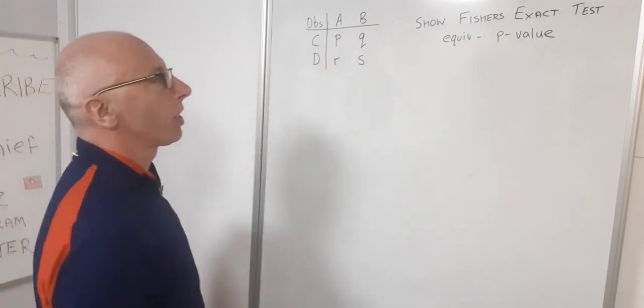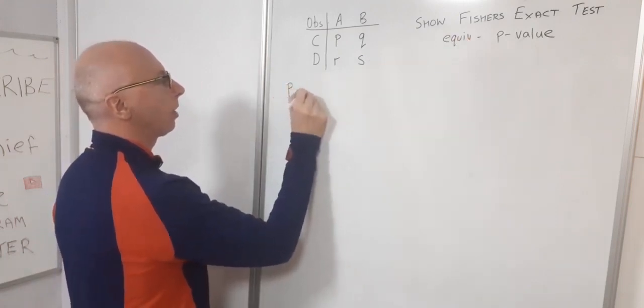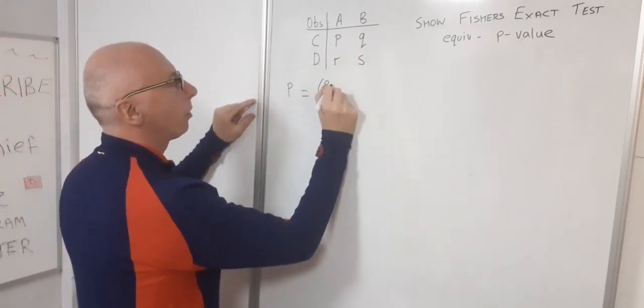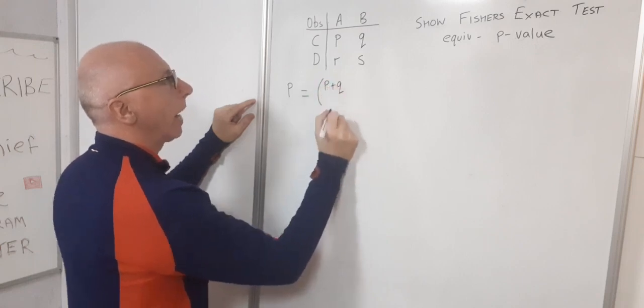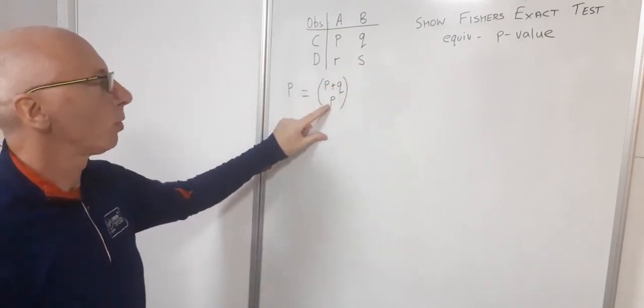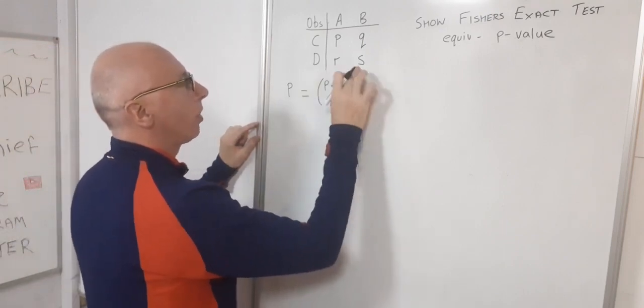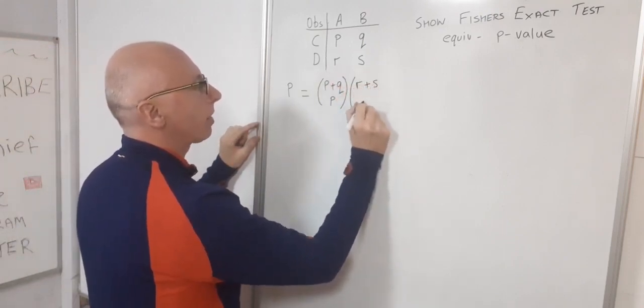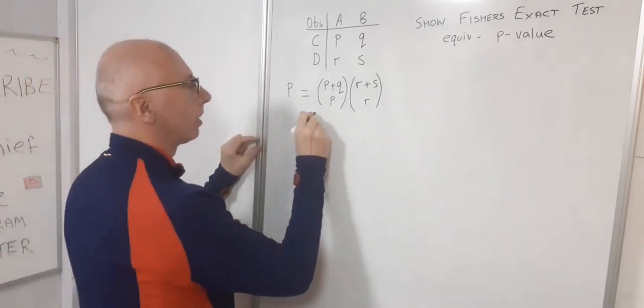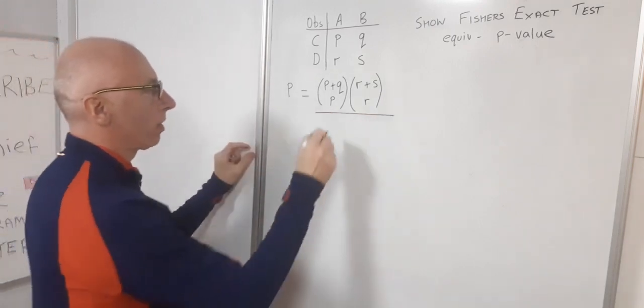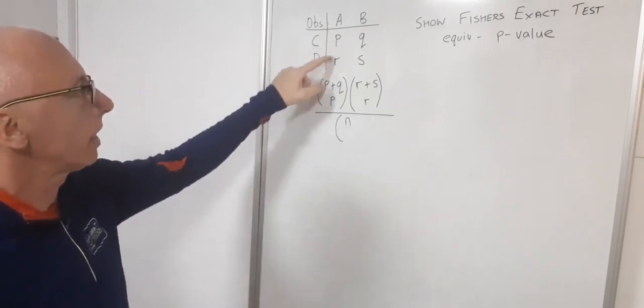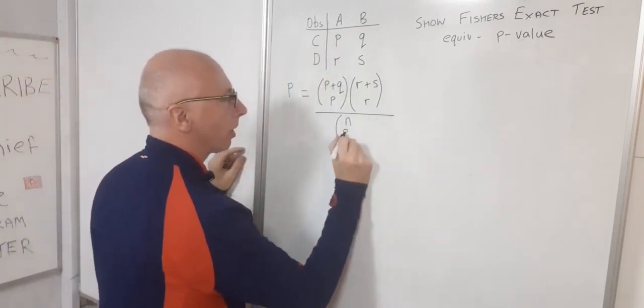Now the formula for the Fisher's Exact Test is something like this, so P would equal, so take the top line first. We use the binomial coefficient of P plus Q and then we just take out the P, so basically that means P plus Q choose P, and then we multiply that with the same on the bottom row which is R plus S and then choose R. So that's what we've got there, and then we divide that by the whole table which is N, so that's our total value, and then we want P plus R, so that's these two here, so N choose P plus R.